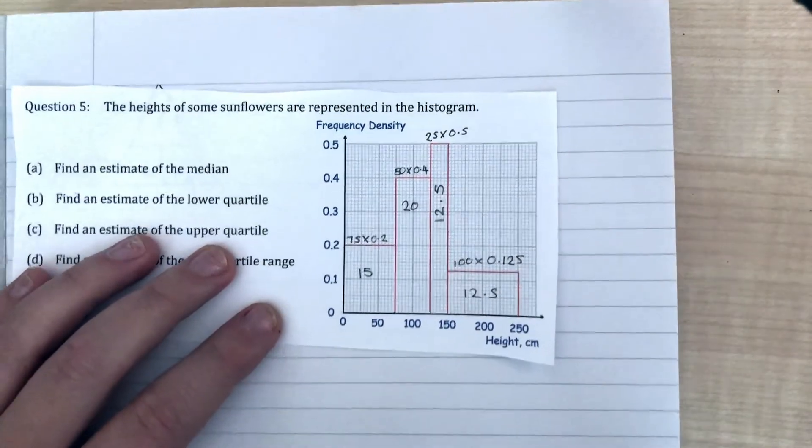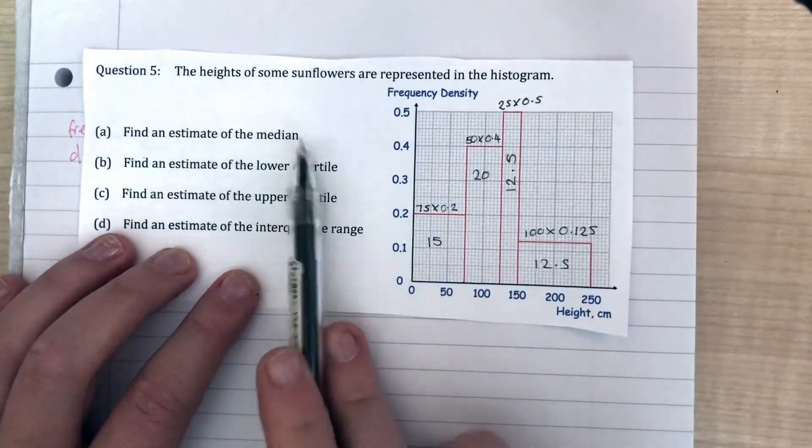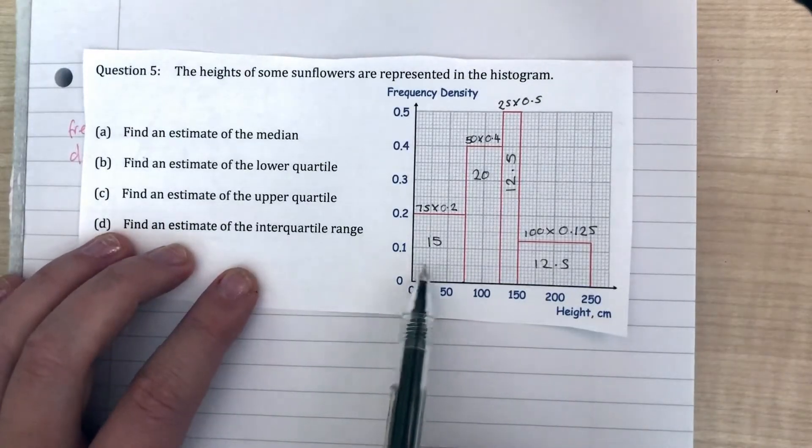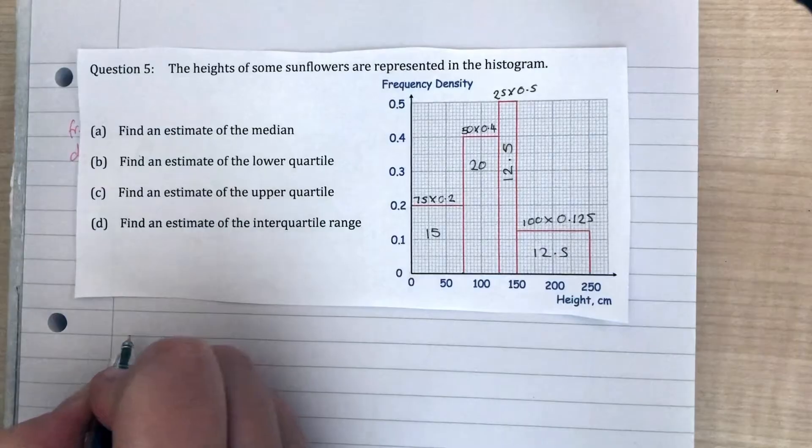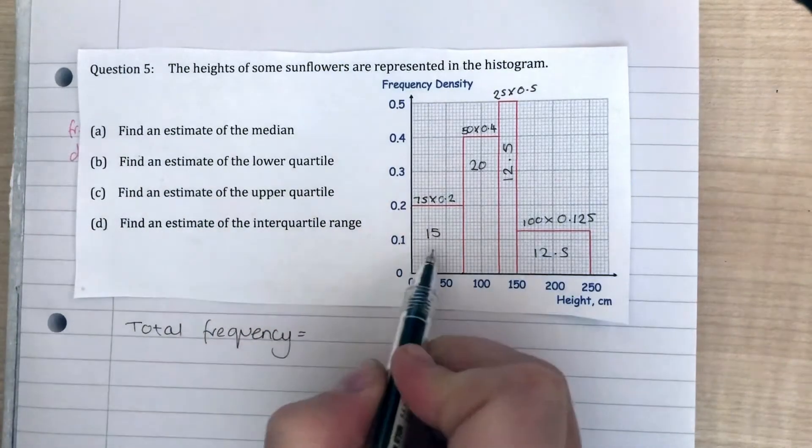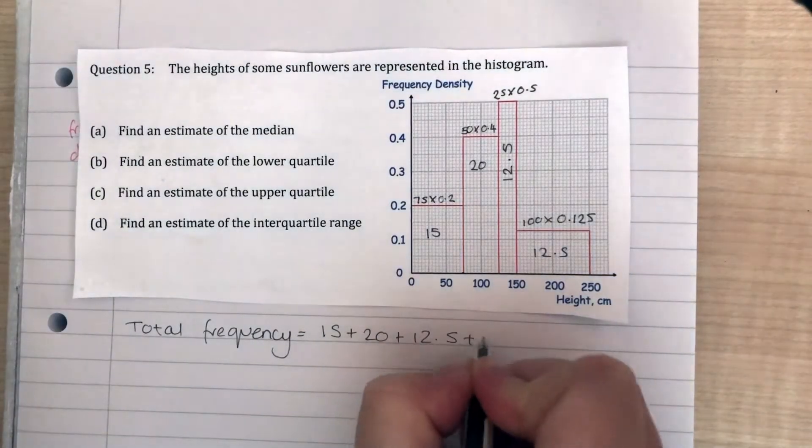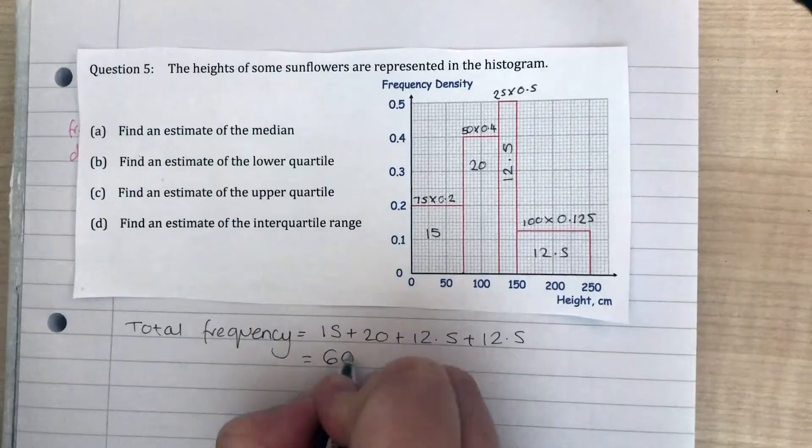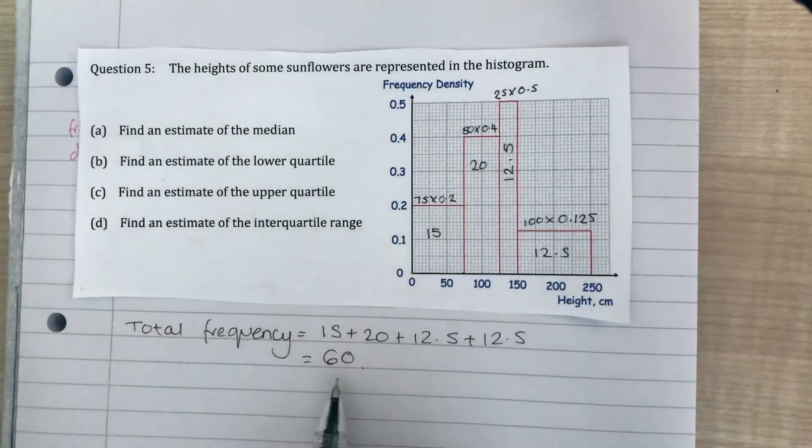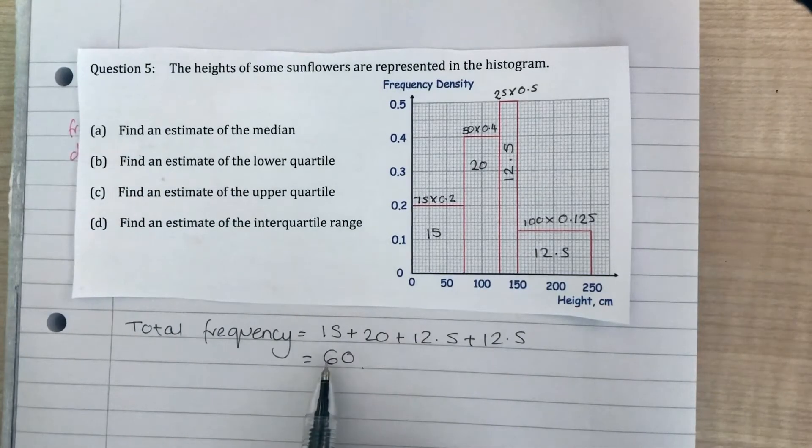Now I've got all of that information, I need to work out how many sunflowers I've got altogether. To work that out, I'm going to do the total frequency. Total frequency is all of these bars added together: 15 plus 20 plus 12.5 plus 12.5, which gives me 60 altogether. This tells us that the median sunflower is going to be in the class that contains the 30th sunflower, because that's halfway.